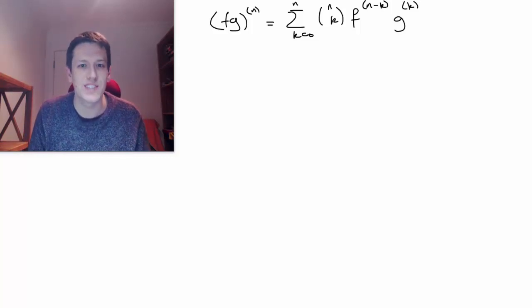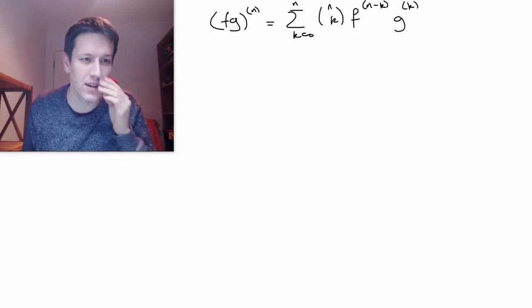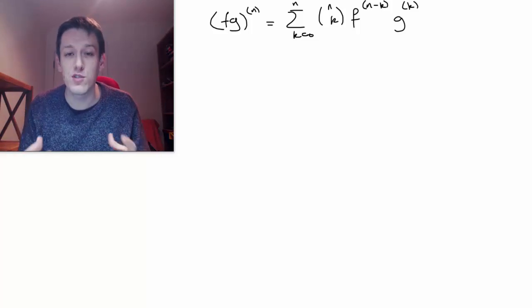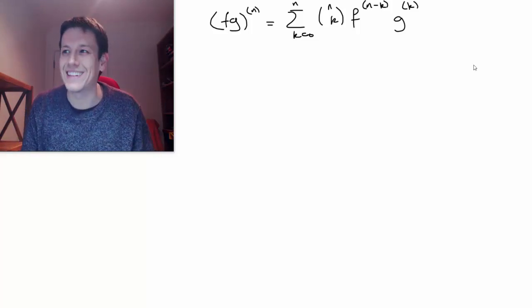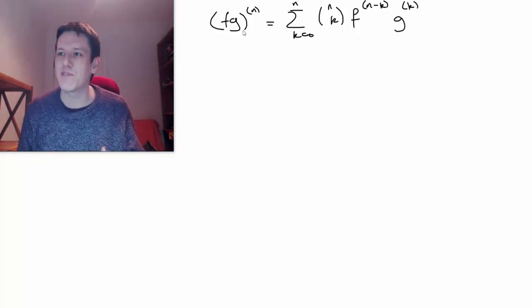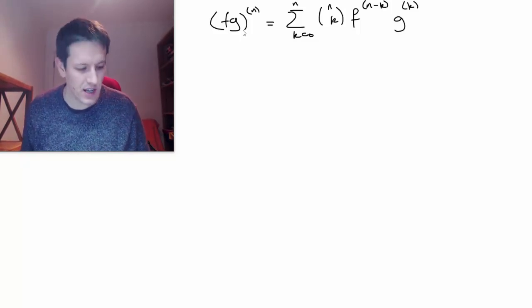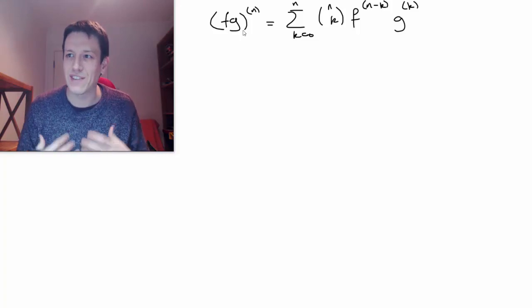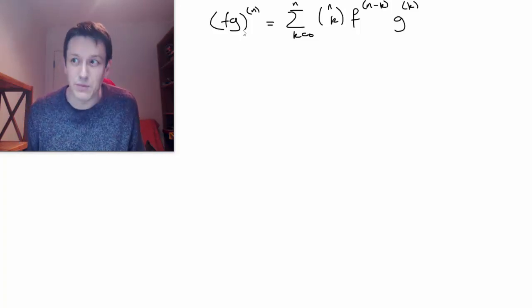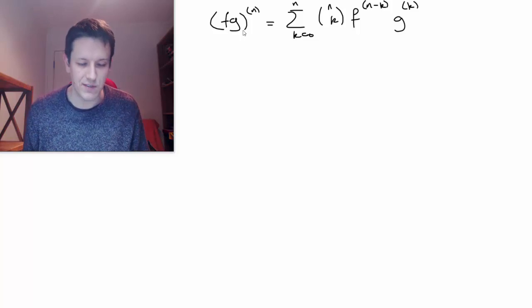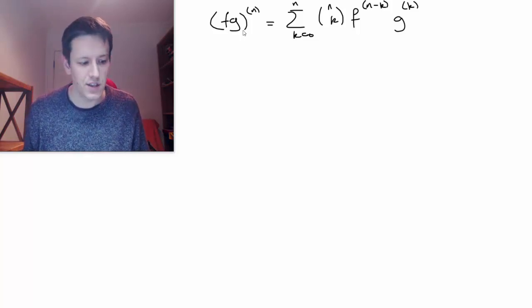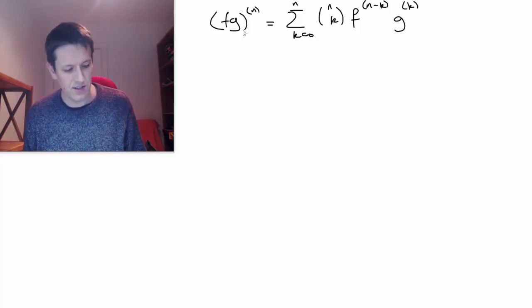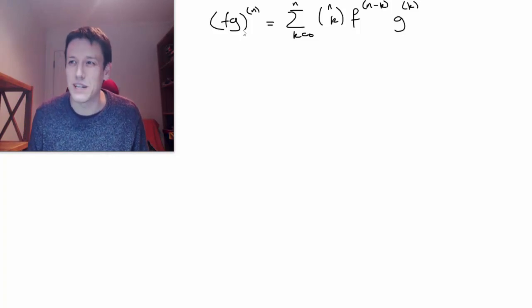Hi, in the previous video we looked at the general Leibniz rule and I gave a fairly informal proof of why this formula is what we get for the nth derivative of a product. I say an informal proof because I gave an idea and explained how it generalized in a way that was correct, but we haven't given any formal proof. So for those of you that are interested in seeing how you would write this down very formally, I am going to do that in this video.